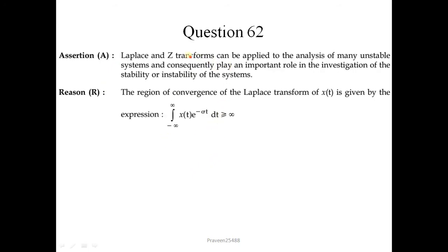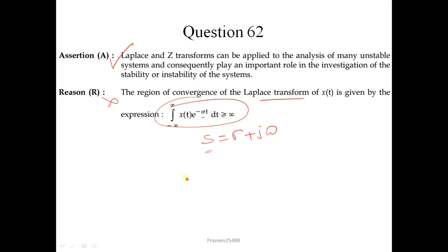Question number 62. Laplace and Z transforms can be applied to the analysis of many unstable systems and play an important role in the investigation of stability. This assertion is correct. However, the region of convergence of the Laplace transform expression given contains only sigma (a real number), whereas it should be S = σ + jω. So the reason is not correct — A is true but R is false. The correct option is 3.